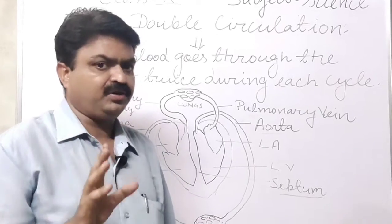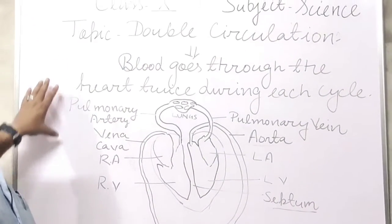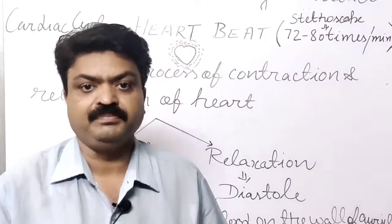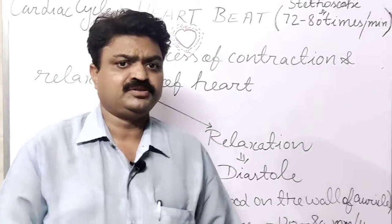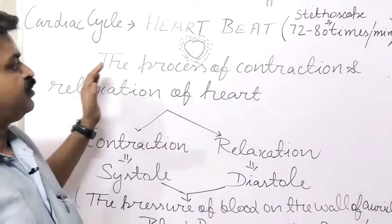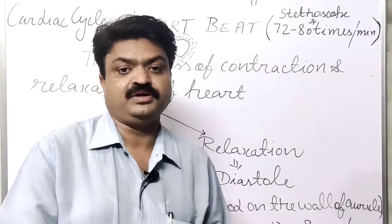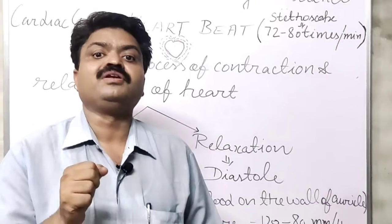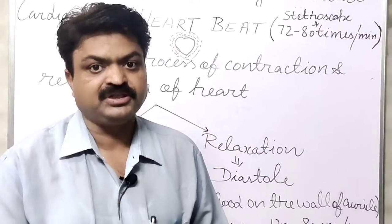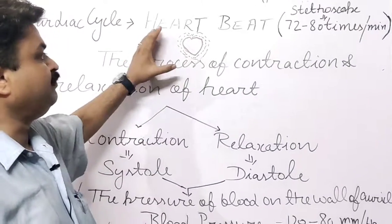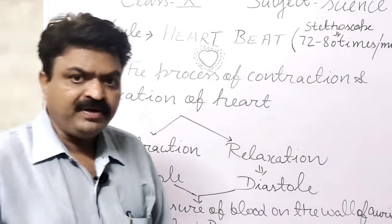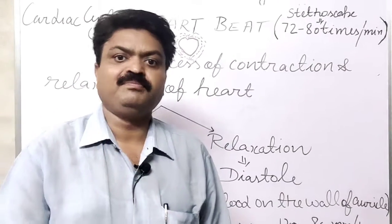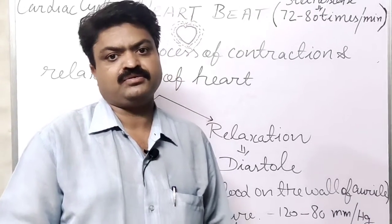You will learn about it and write it in your notebook. Now we come to the next topic: heartbeat. Heartbeat means the process of contraction and relaxation of the heart. That process is known as heartbeat. We can observe it with the help of a medical device that is known as a stethoscope — the device you generally observe doctors wearing around their neck.